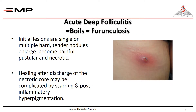Acute deep folliculitis is common and is also called boils or furuncles. The initial lesions are usually single or multiple, hard, tender nodules, which enlarge, become more painful, and pus appears in the center of the lesion like any abscess — first a cellulitic stage, then pus forms and discharges through the area of least resistance, which is the skin. Healing after discharge of the necrotic core may be complicated by scarring and post-inflammatory hyperpigmentation, because it affects the lower part of the dermis.